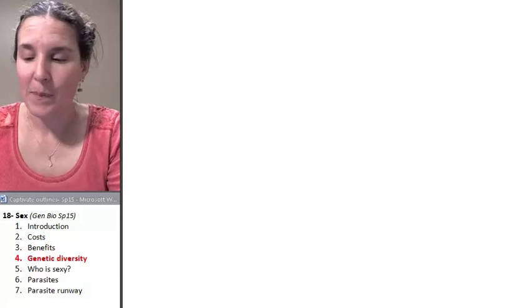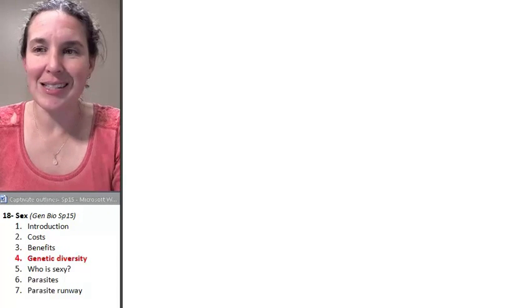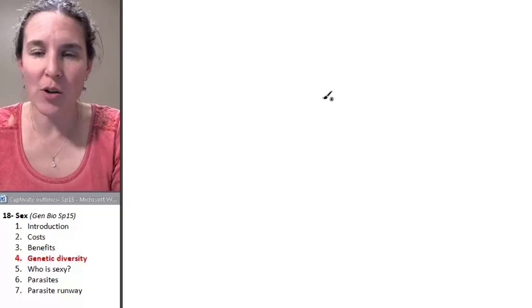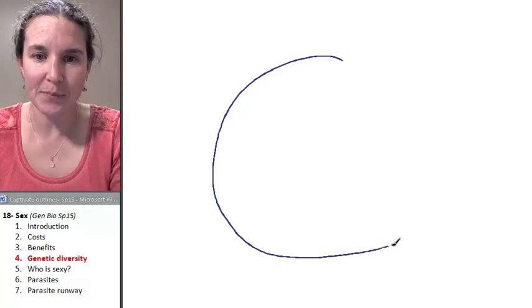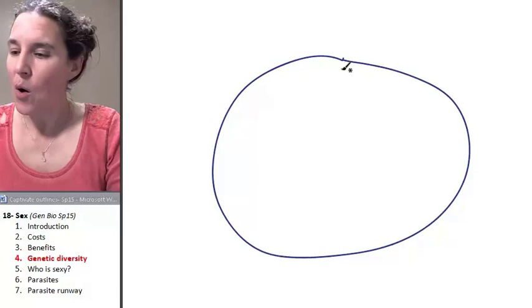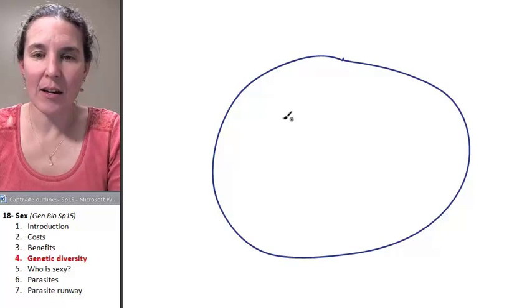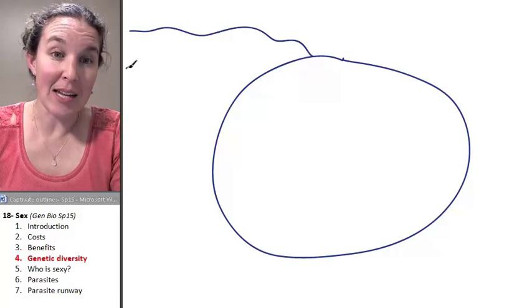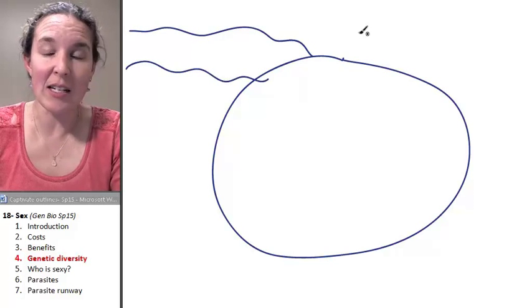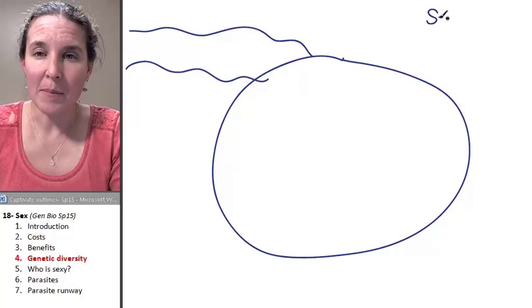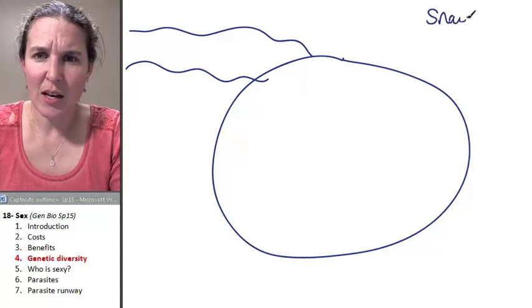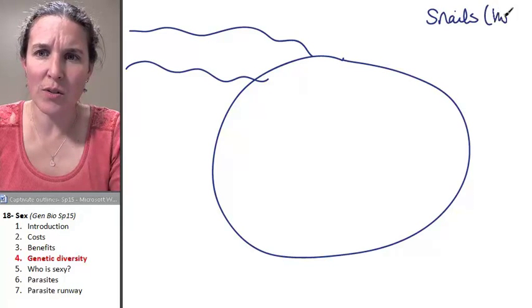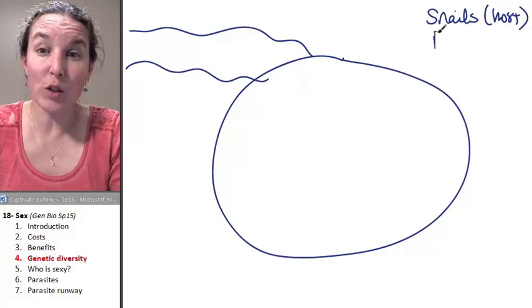For example, they have a snail in New Zealand. I'm going to draw you a picture of this lake, and the way that this little situation works, there are snails that can be infected by flukes. So snails are the host, and flukes are the parasite.